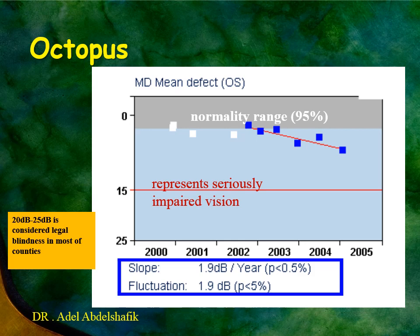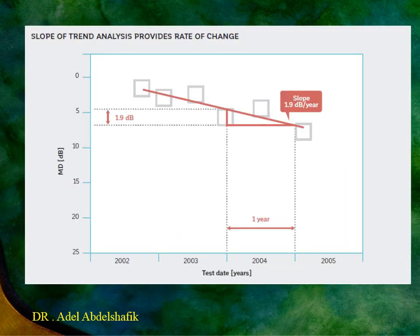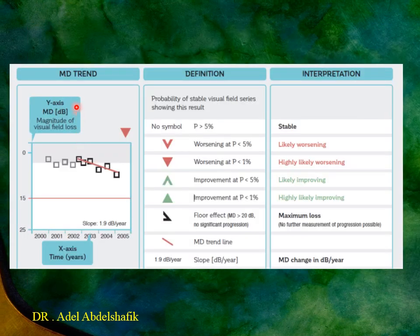In the Octopus, you can see the mean deviation slope over time, along with the probability of it being abnormal at the five percent or one percent level. If there is improvement, it will be shown in green at five percent or one percent. If you see the floor effect marker, it means the mean deviation has reached minus 20 dB and no further reliable calculation can be followed.